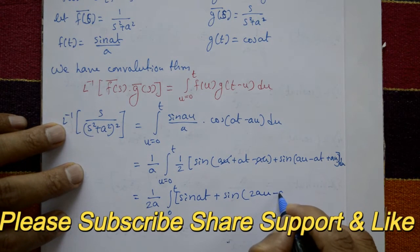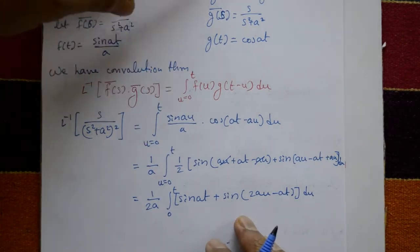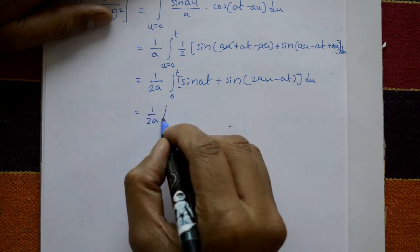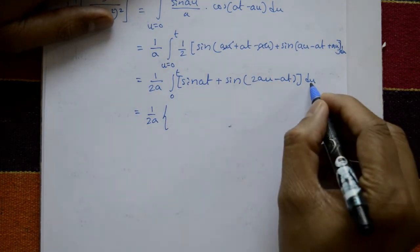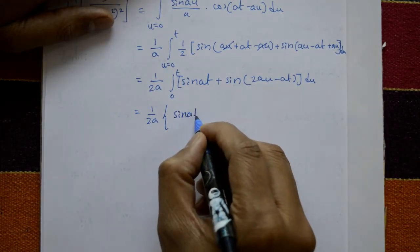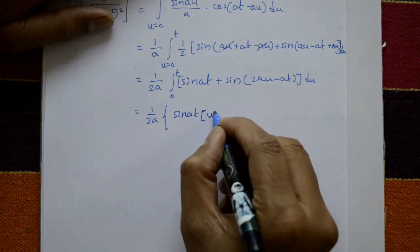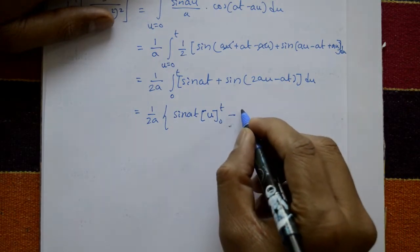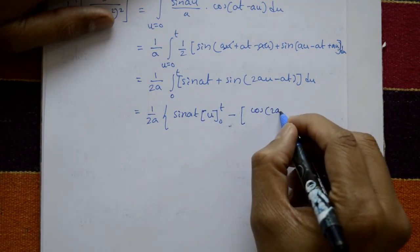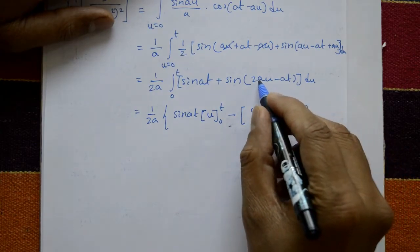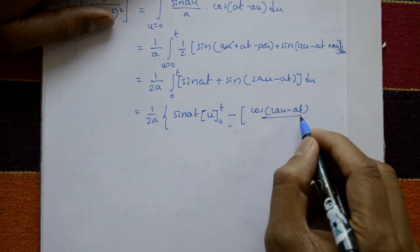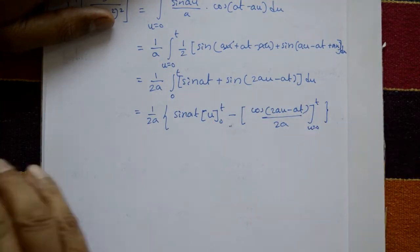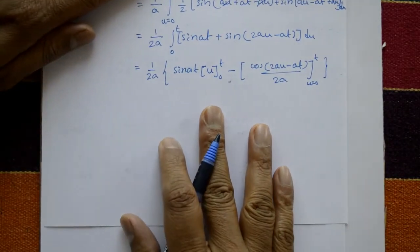Now integrate: (1/2a) times the integral from 0 to t of [sin(at) + sin(2au − at)] du. Since sin(at) is a constant with respect to u, its integral is u·sin(at). The integral of sin(2au − at) is −cos(2au − at)/(2a), with limits u=0 to t.